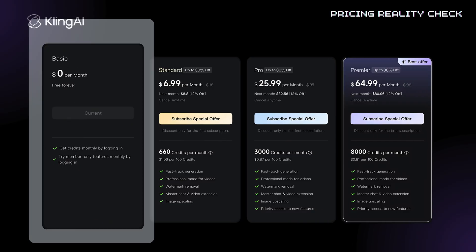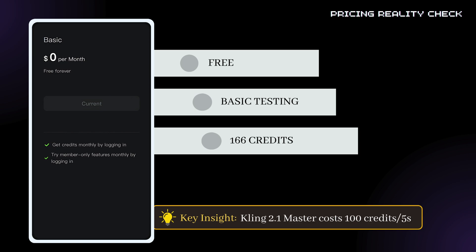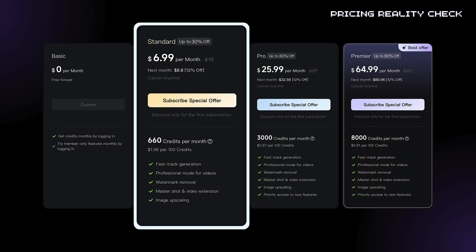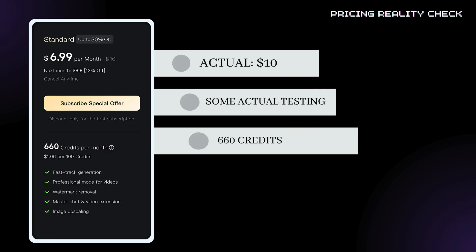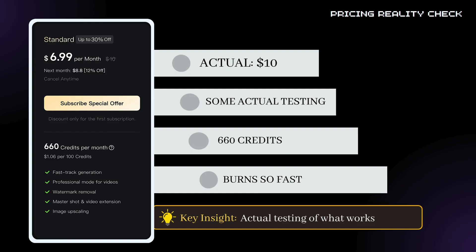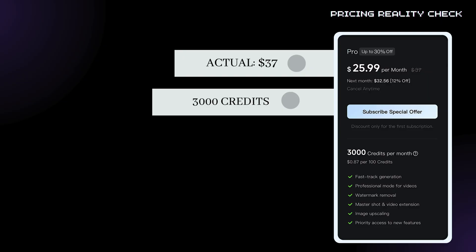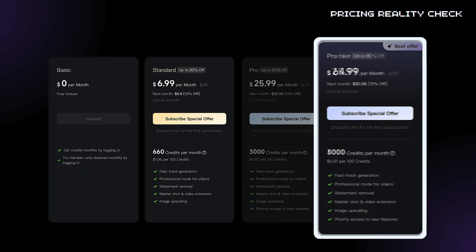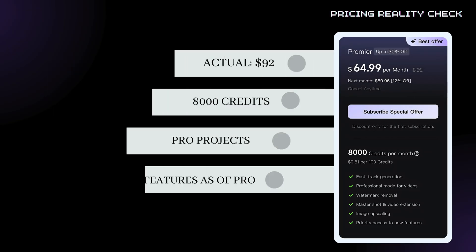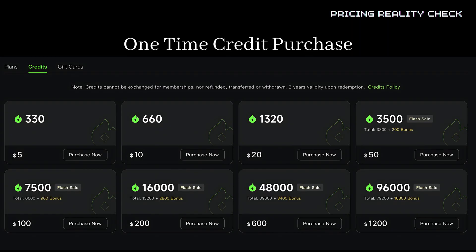To help you plan better, here's how Kling's pricing actually works. The free tier gives you 166 credits — but be careful, a single 2.1 Master video costs 100 credits, so you get maybe one to two videos. Standard costs $10 — I got it for $7 promotional — that's 660 credits, which I burned through in three hours. Pro at $37 gives 3,000 credits, and I burned every single one on this project plus some testing. Premiere at $92 gives 8,000 credits, but if you're doing serious work, that won't last either. They also offer one-time credit purchases if you need extras.